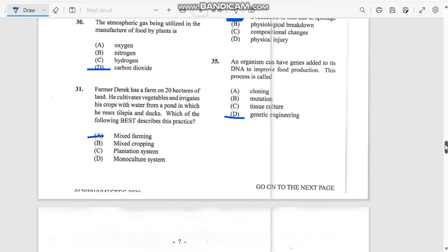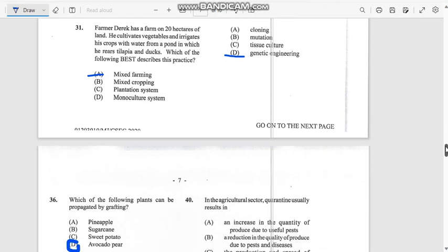Number 35: Organisms can have genes added to DNA to improve food production. This is called - anything to do with DNA where they change the genes - genetic engineering. Anything with genes has to do with genetic engineering, like changing the size of a tomato or changing their gene size.